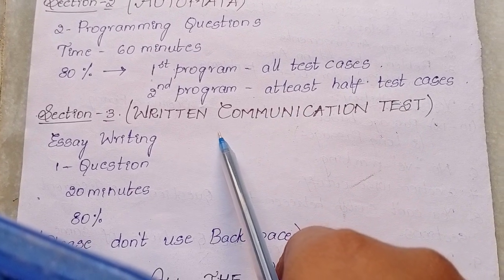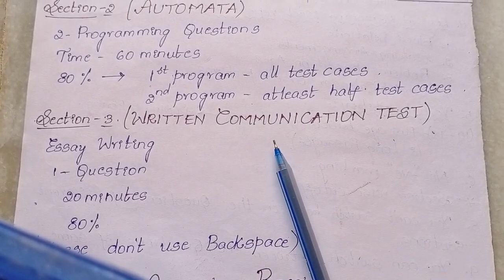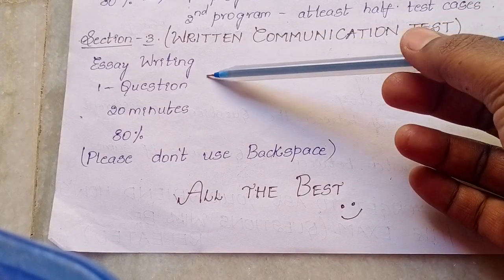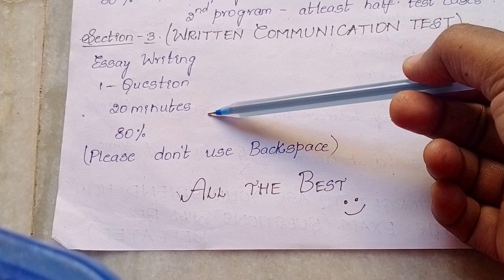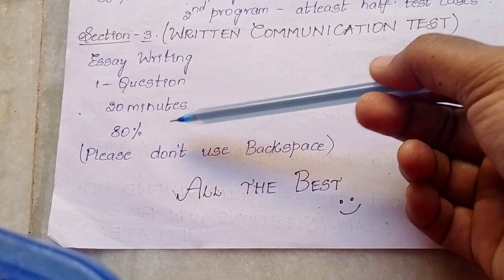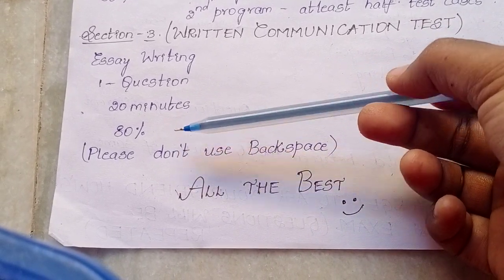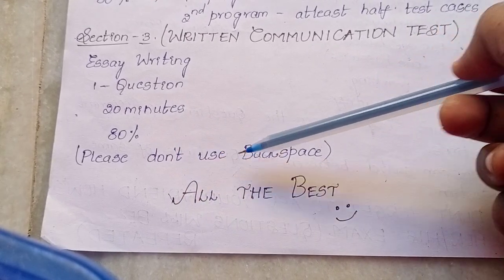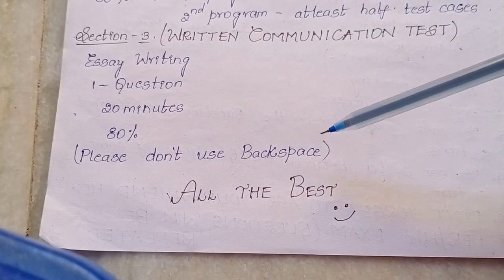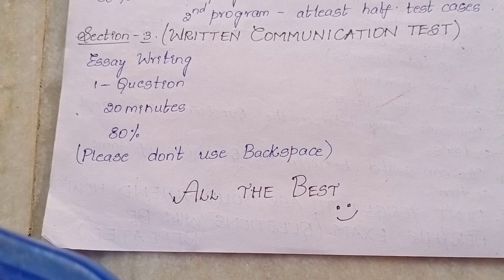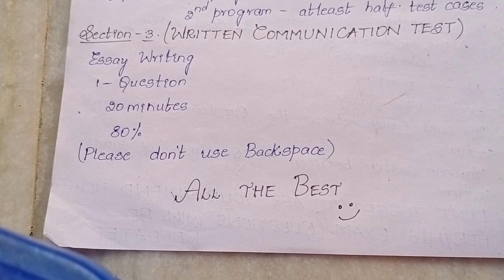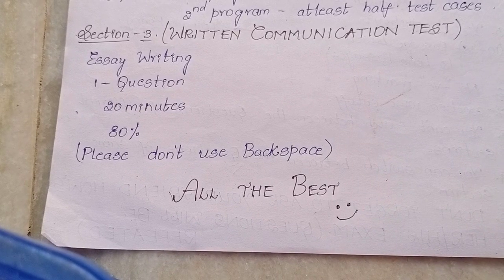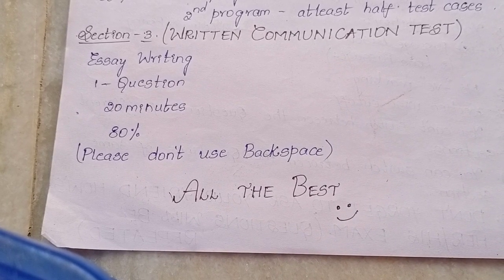When it comes to section three, the written communication test, it is completely based on essay rating. One question will be asked, 20 minutes will be allotted, and the cutoff is 80 percent. Please don't neglect this section and please don't use backspace. If you get any typing mistakes or errors, just neglect them — nothing will happen. Just don't use backspace, and you're good to go.